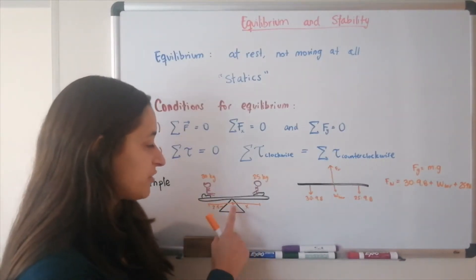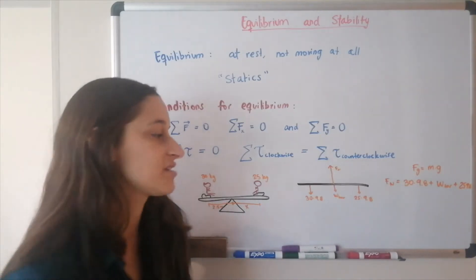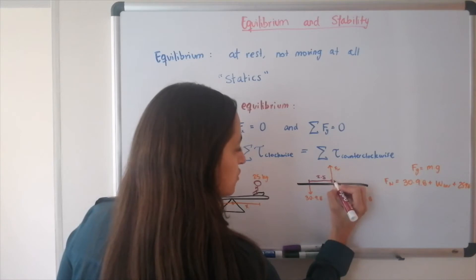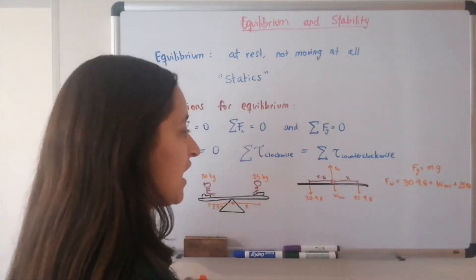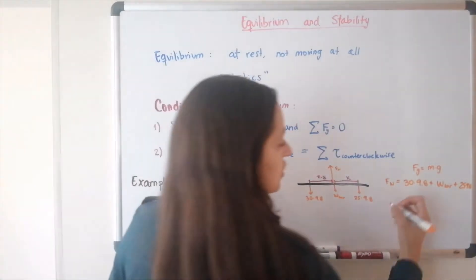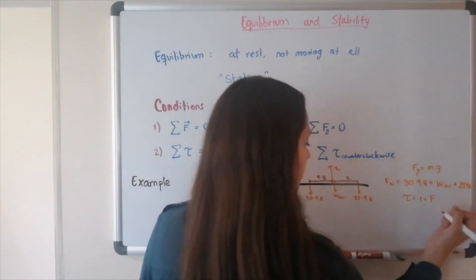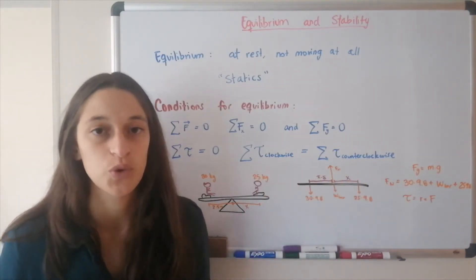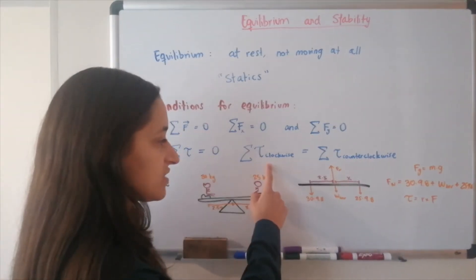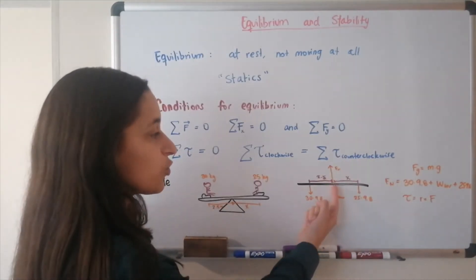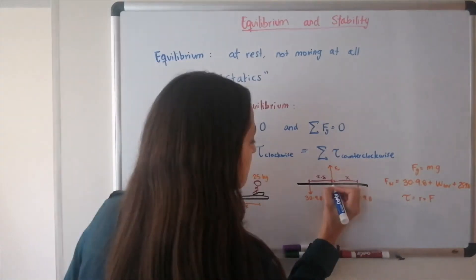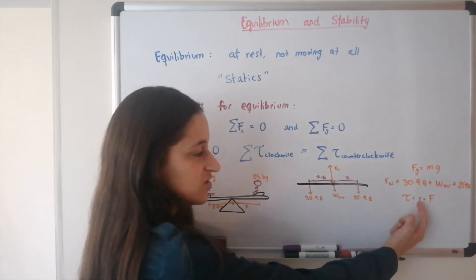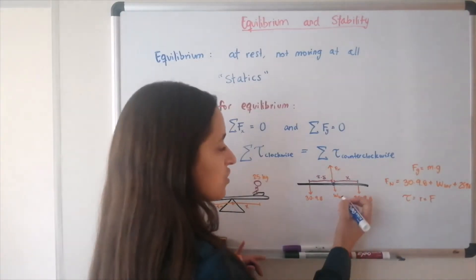With condition two, we can solve the problem and figure out at what distance the boy has to be for the bar to be in rotational equilibrium. We remember that the 30 kg kid's force is at a distance of 2.5 m, and the 25 kg kid's force is at distance x — the unknown. The torque equation is T = r × F. The center of rotation is in the middle where the support is, so the forces acting right at the center (normal force and bar weight) produce zero torque since radius is zero.